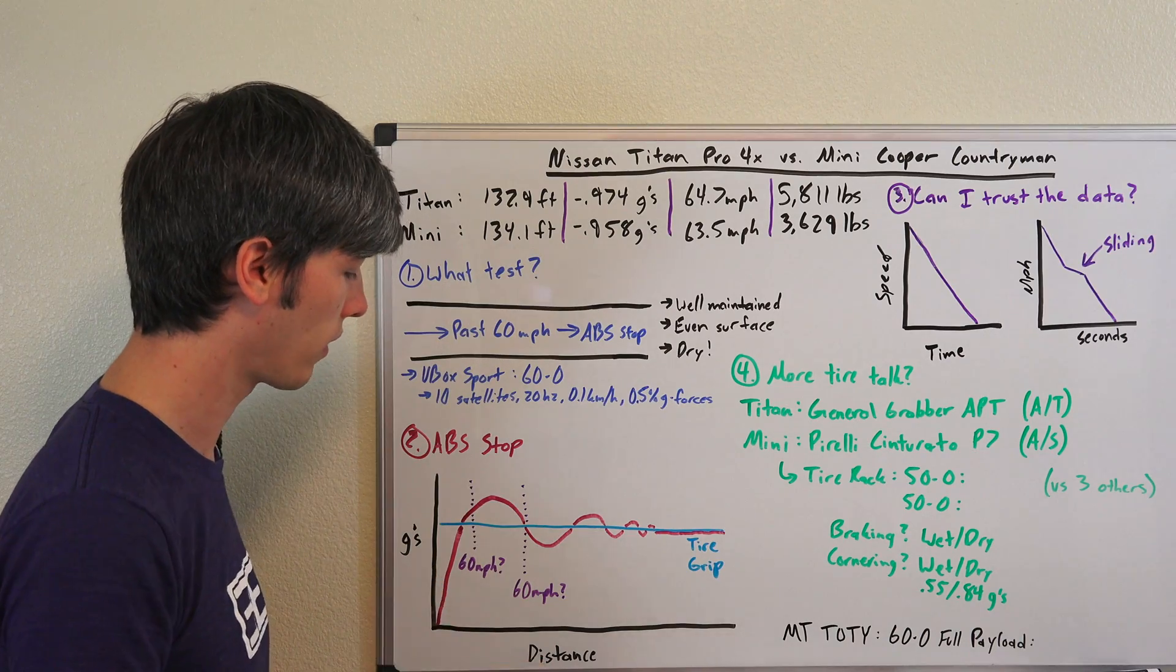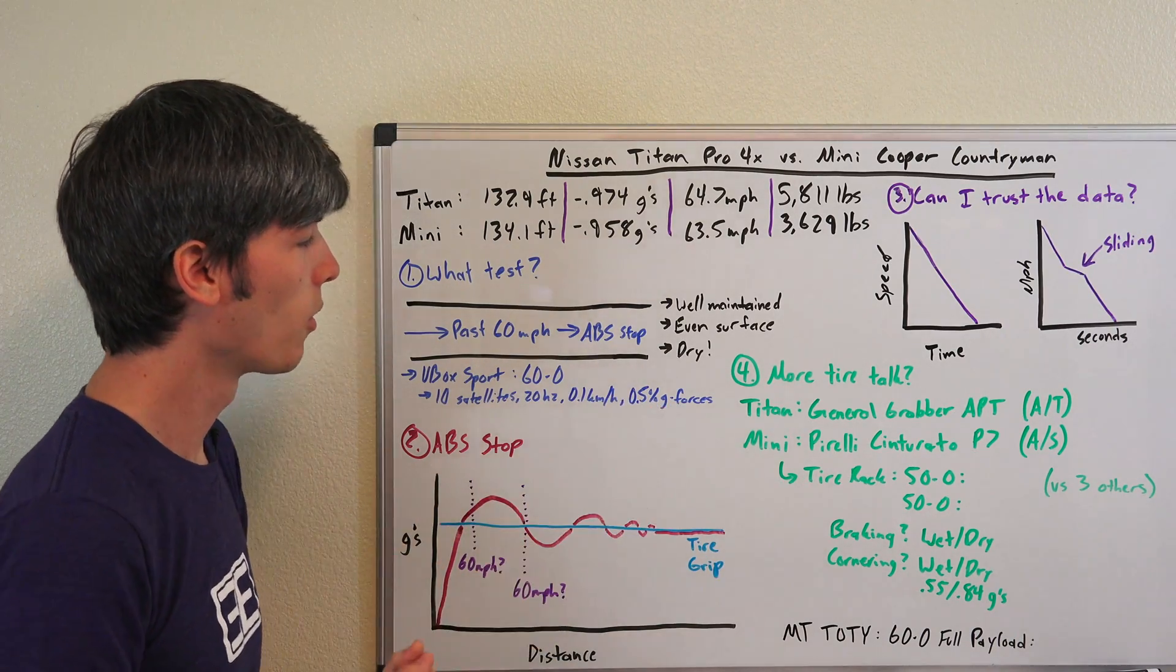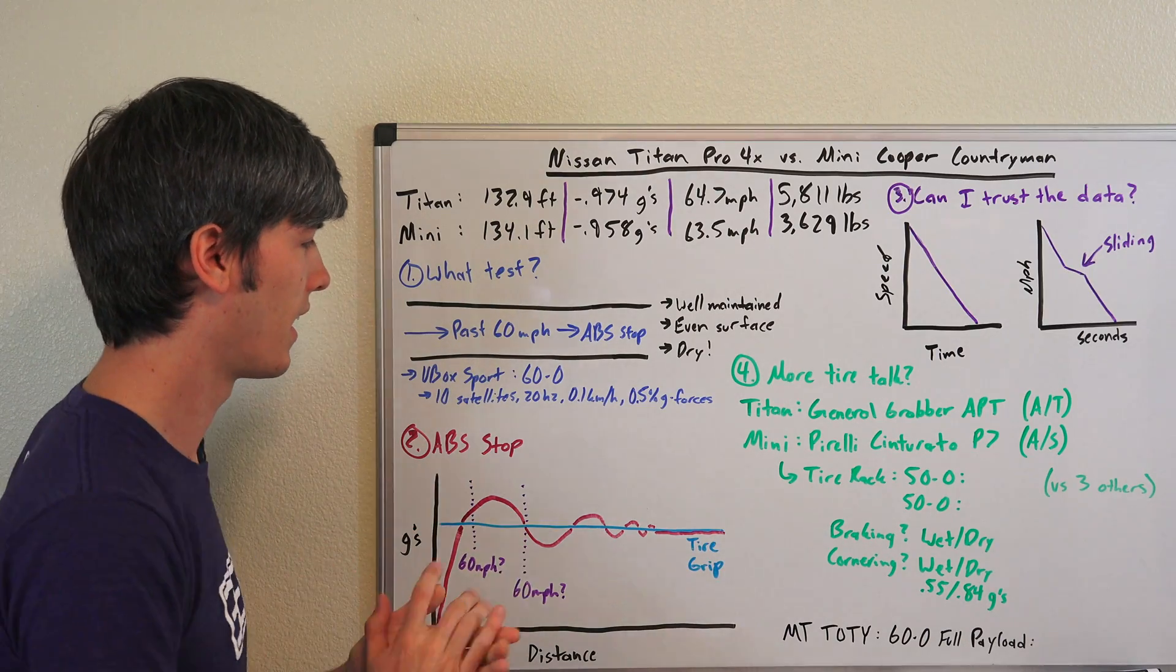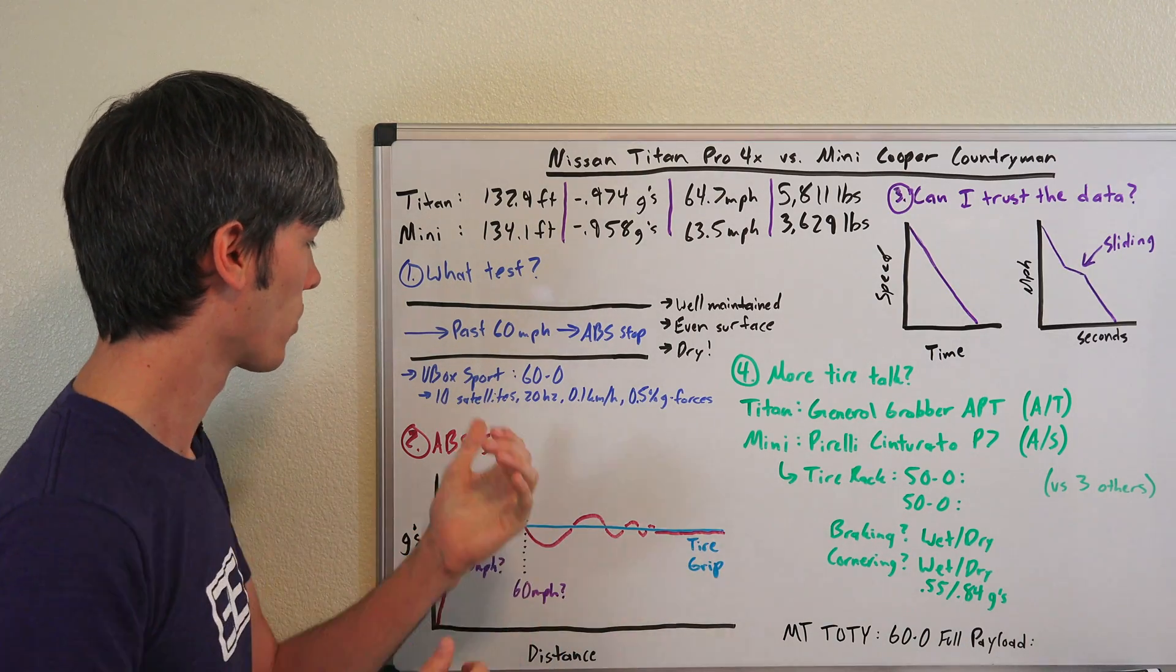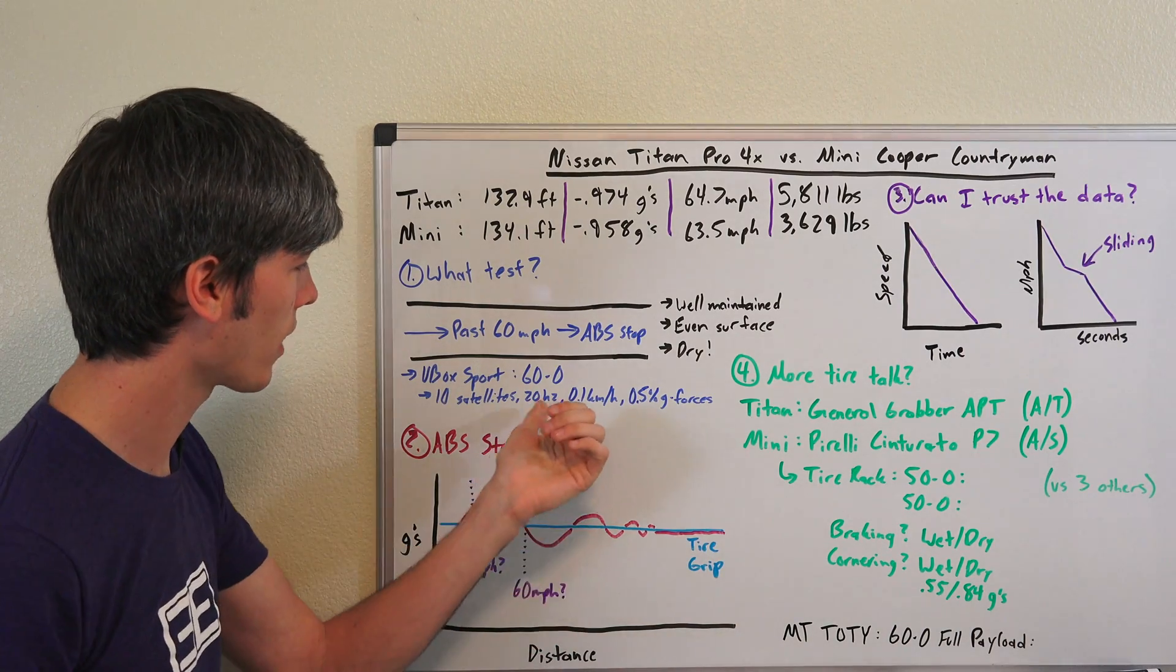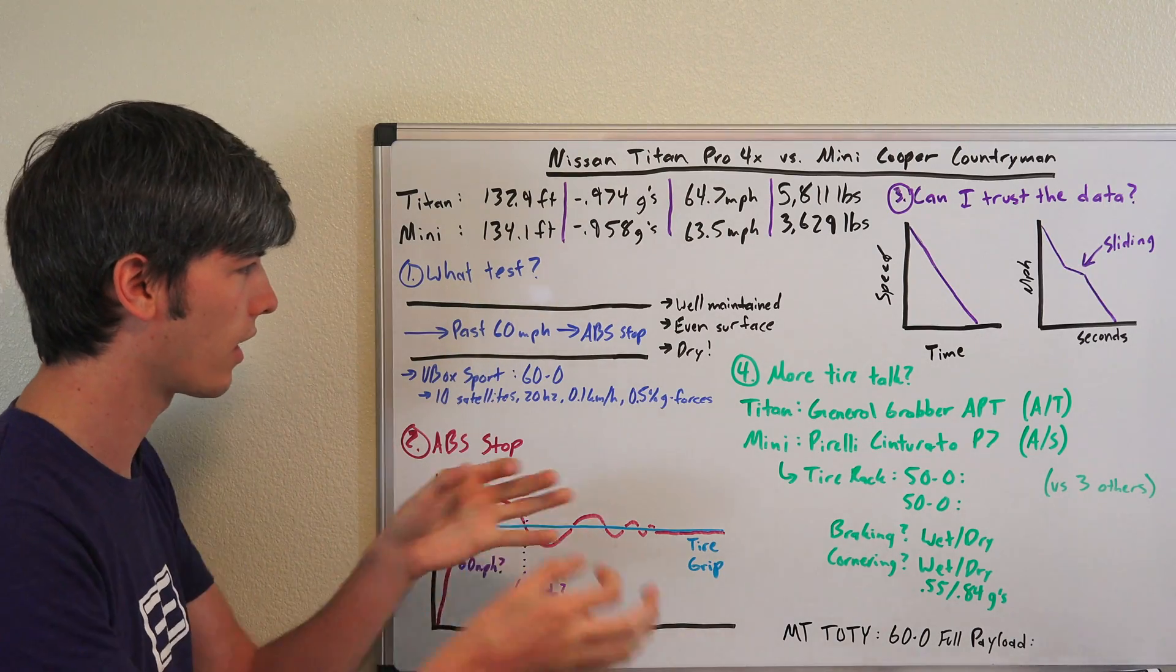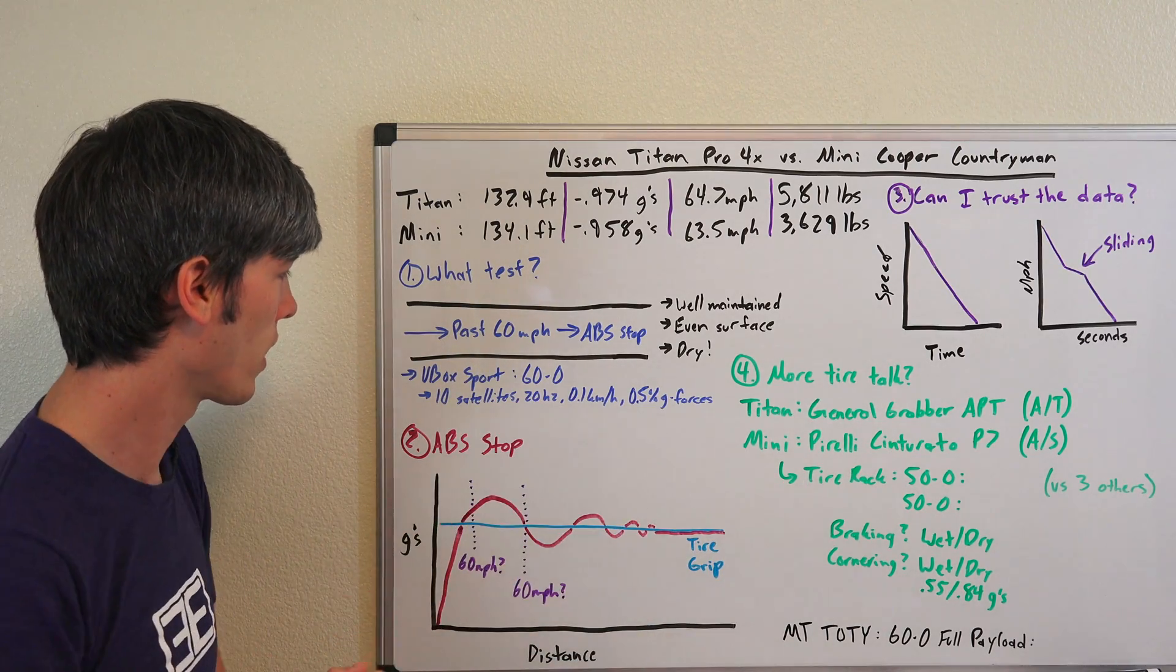They say they can give you speed with an accuracy within 0.1 km per hour, which is incredibly impressive. They can give you g-forces within half a percent accuracy. Super accurate device even though it is a consumer product.